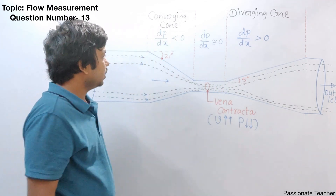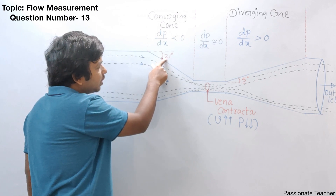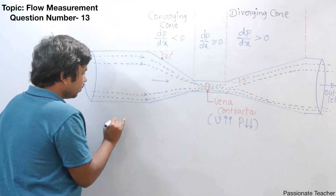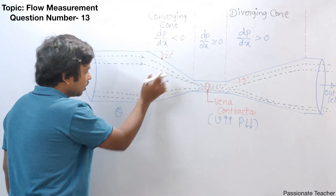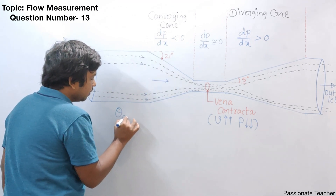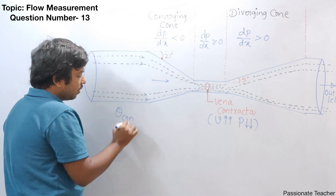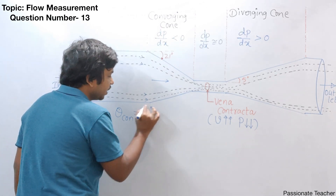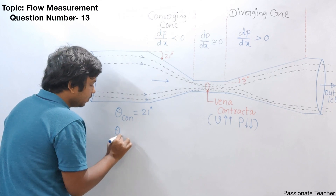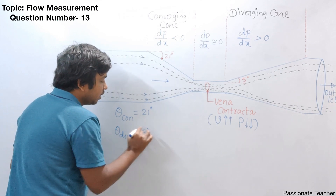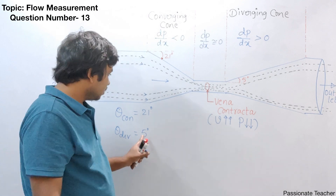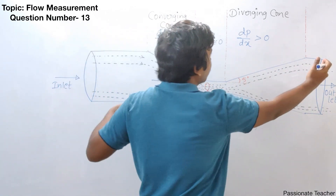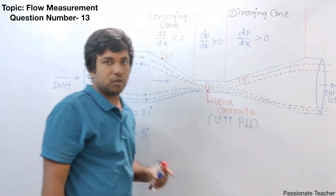In one single line: during the converging cone the fluid loses pressure, exactly near vena contracta the pressure variation is very less, and in the diverging cone the pressure growth will be higher. Now the most important question is: why should the converging angle be 21 degrees here, and why should the diverging angle be only 5 degrees? And why is the length of the diverging cone very high in the case of a venturimeter?